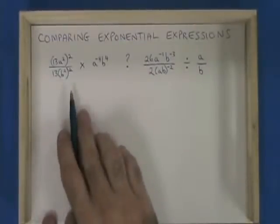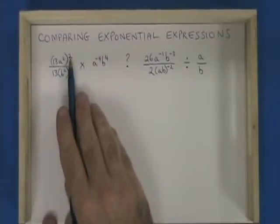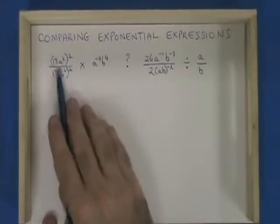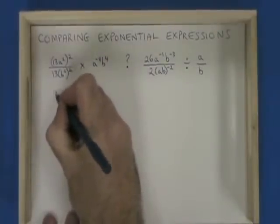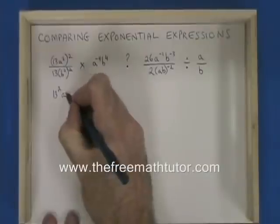On the left side, I'm going to apply this power of 2 to the contents of the bracket, and I get 13 squared a to the power of 4.